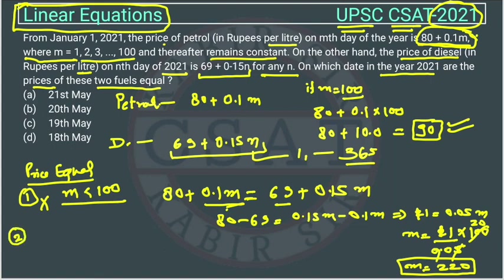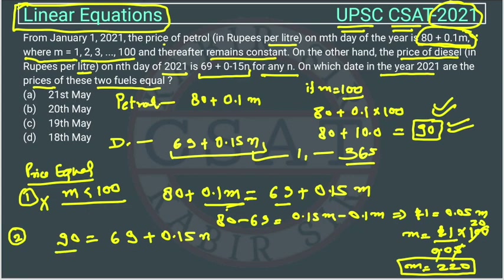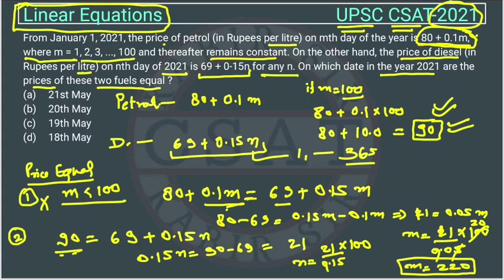In the second case, the prices become equal after day 100. In that case, the petrol price is fixed at 90 for day 100 and above. So the petrol price of 90 is equal to the diesel price: 90 equals 69 plus 0.15n. From this, 0.15n equals 90 minus 69, which is 21. So n equals 21 divided by 0.15, which equals 140. On the 140th day, the prices will become equal.